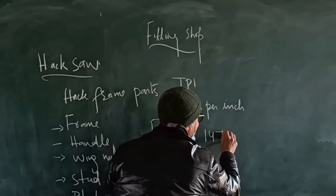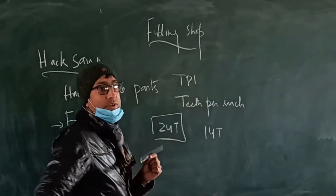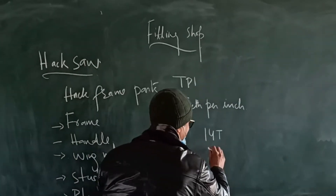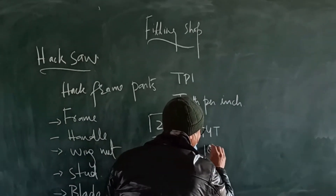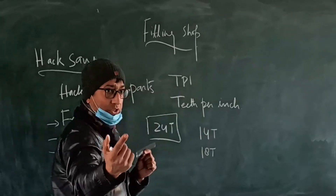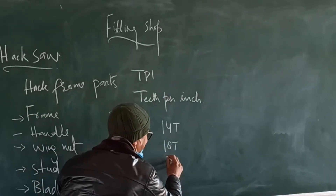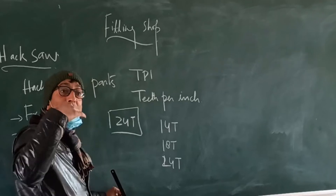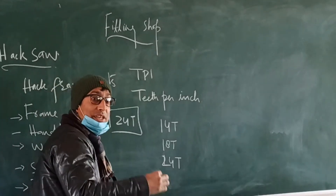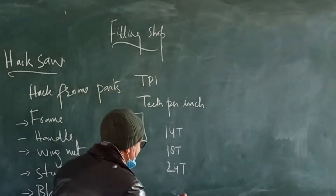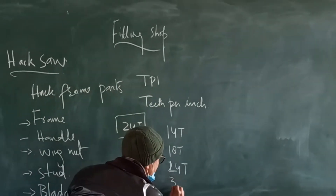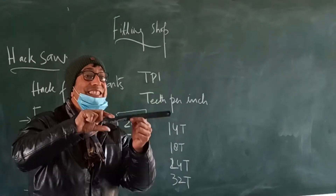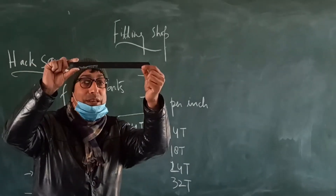There are four categories of hacksaw blades. The first one is 14 teeth per inch, next is 18 teeth per inch, then 24 teeth per inch, and the highest — which is the finest — is 32 teeth per inch. So these are the four categories of hacksaw blades.